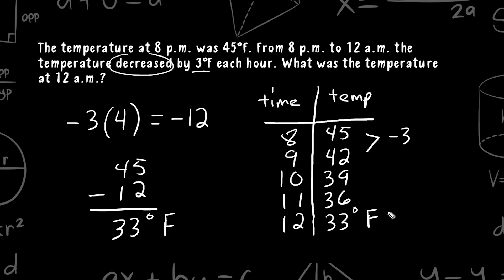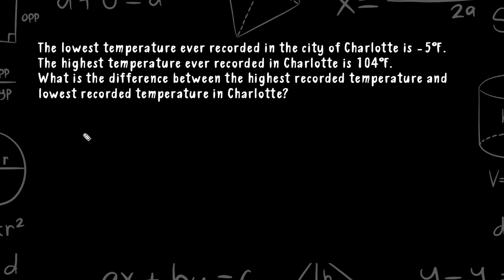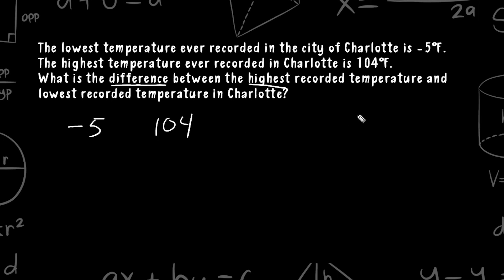Let's go ahead and do one more problem. This problem reads that the lowest temperature ever recorded in the city of Charlotte is negative 5 degrees Fahrenheit. The highest temperature ever recorded in Charlotte is 104 degrees Fahrenheit. We have to determine what is the difference between the highest and lowest recorded temperatures in Charlotte.